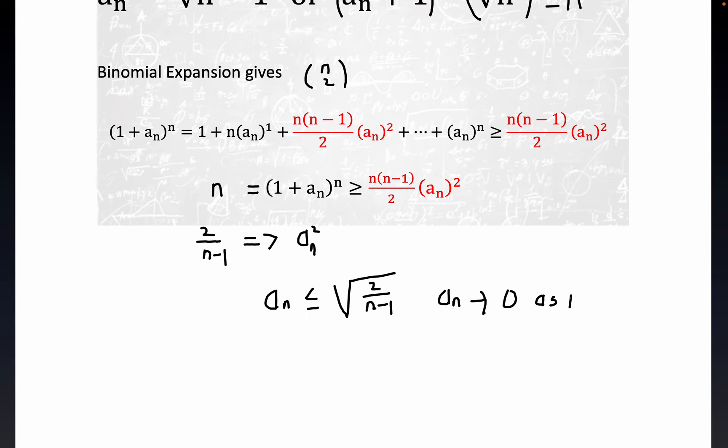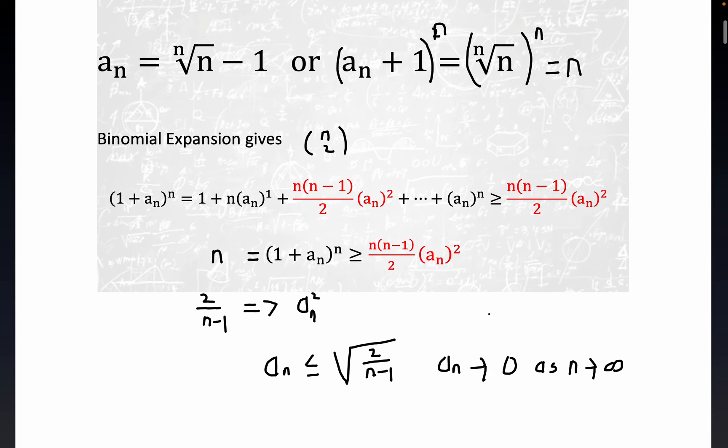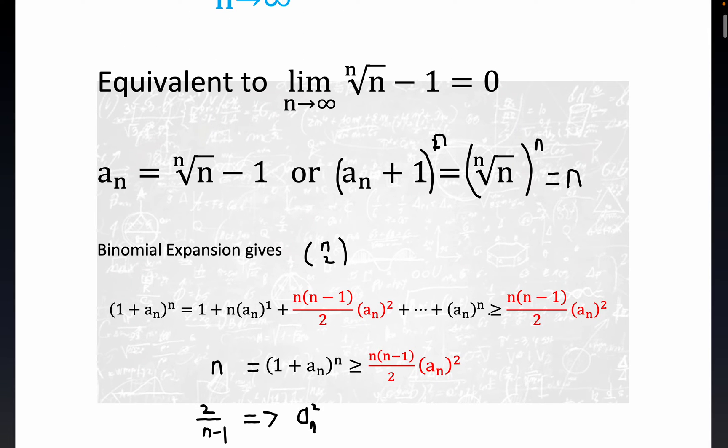I'll just use the standard arrow notation. That's because if n gets large right here, this denominator gets large and you're getting something that approaches the square root of zero. So we've shown that a sub n approaches zero, but remember that's exactly what we set out to do.